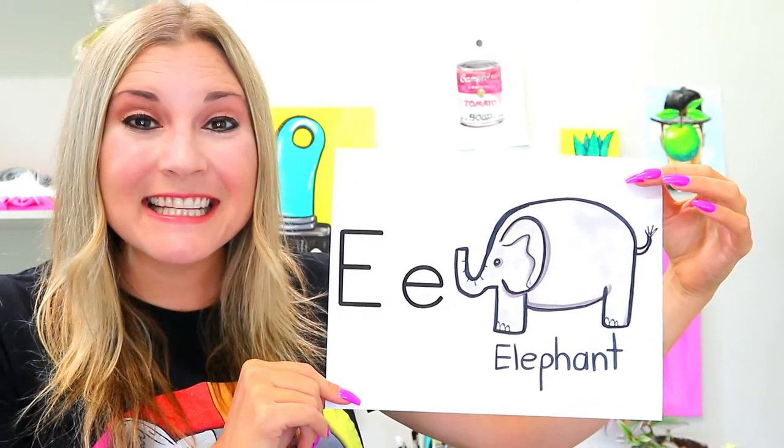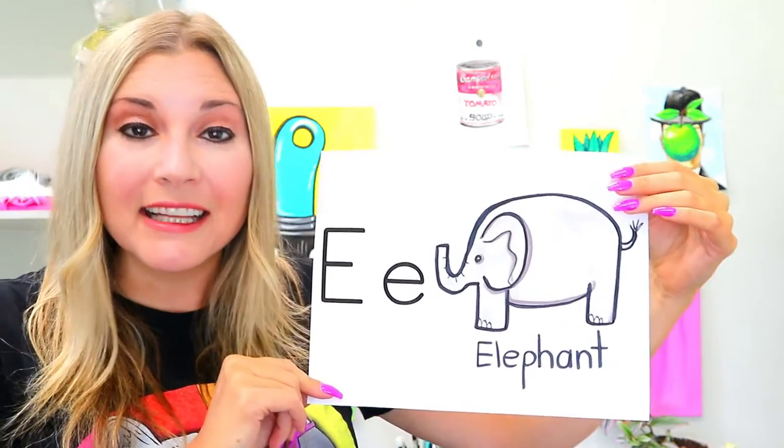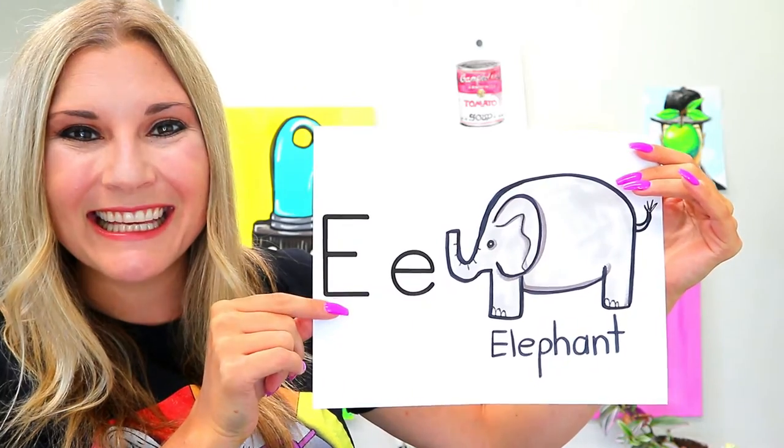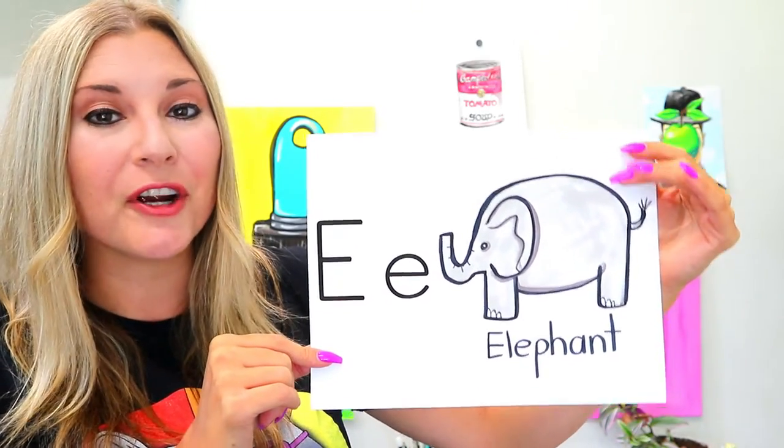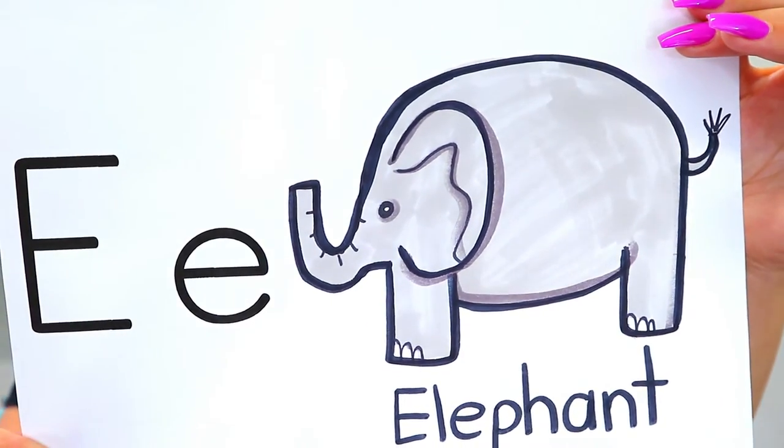I'm BizArtastic and in this video art tutorial we're going to learn how to draw a lovely little elephant. Elephant starts with the letter E, so grab your favorite art making mediums and let's make some art.